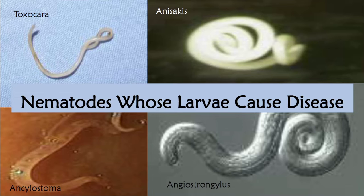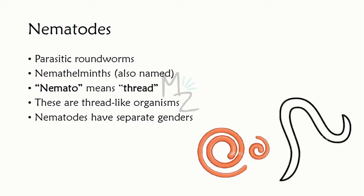I've discussed all the intestinal nematodes and tissue nematodes in my recent videos — go check them first, then watch this video. Before starting, these videos are meant for educational purposes; things and treatments may change with time. Nematodes are parasitic roundworms, also termed nematohelminths because 'nemato' means threads — they can be called thread-like organisms.